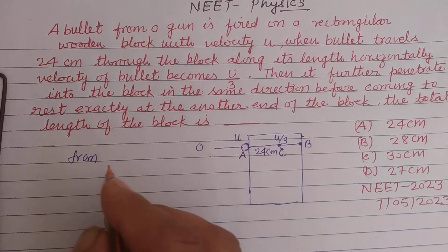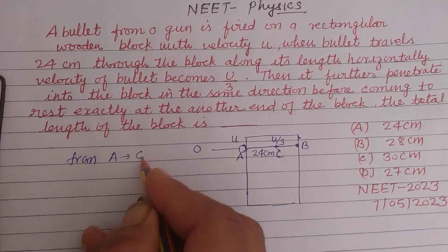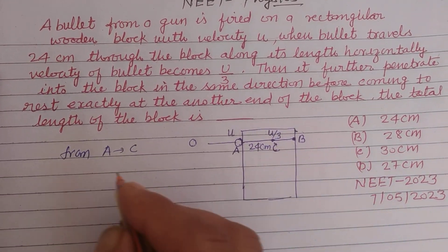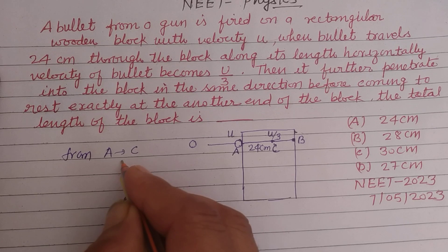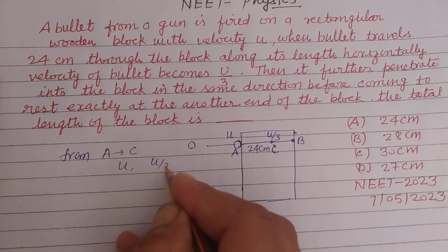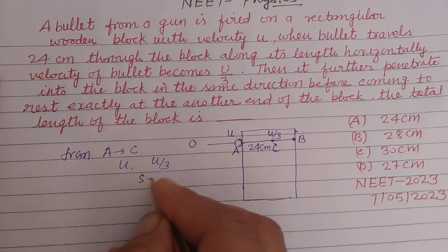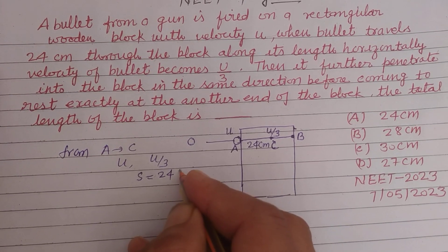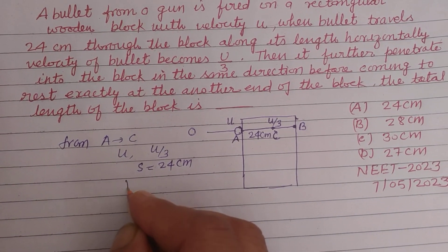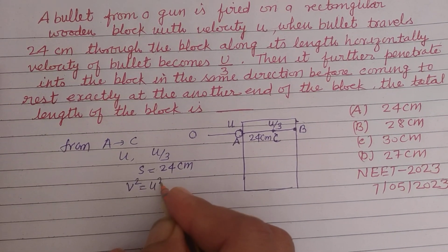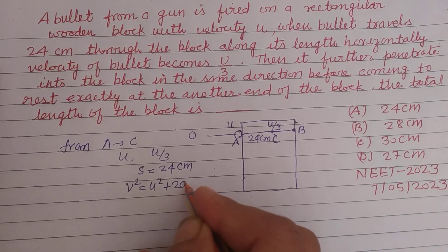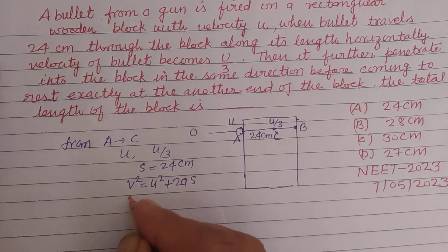So student, from A to C, for the motion of A to C, initial velocity is U, final velocity is U by 3, and distance is 24 centimeters. Using the third equation v² = u² + 2as, here